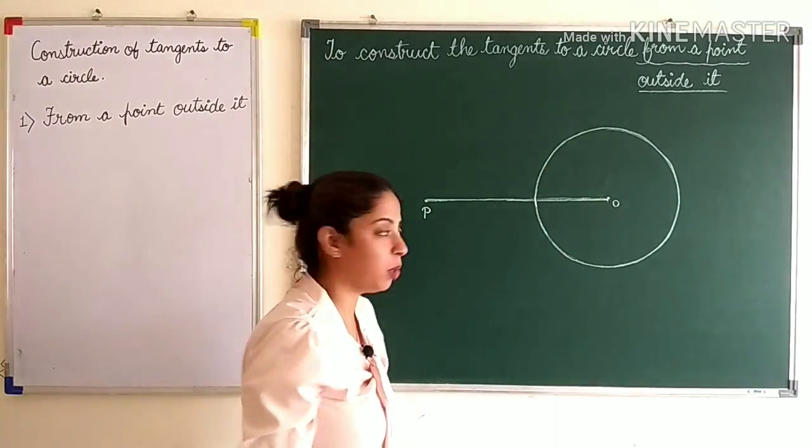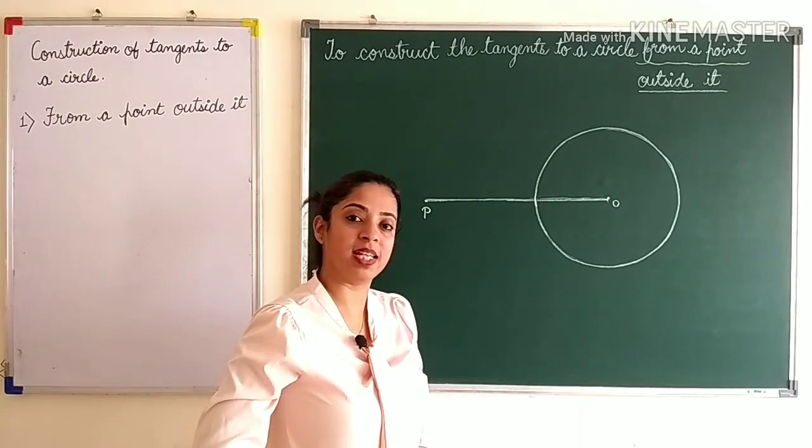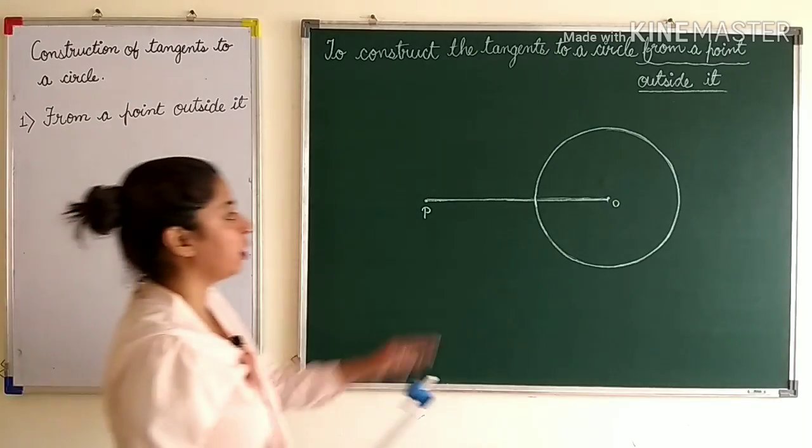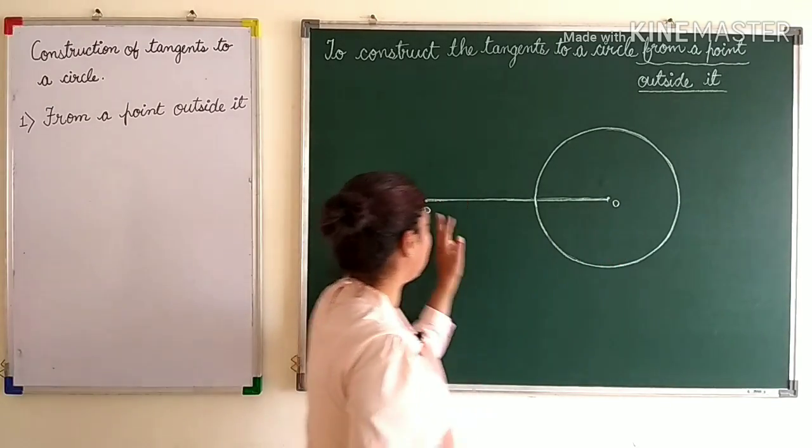Our second step would be bisecting this line segment OP. So we will draw a perpendicular bisector of the line OP. You all already know how to draw a perpendicular bisector. I'll teach you again.